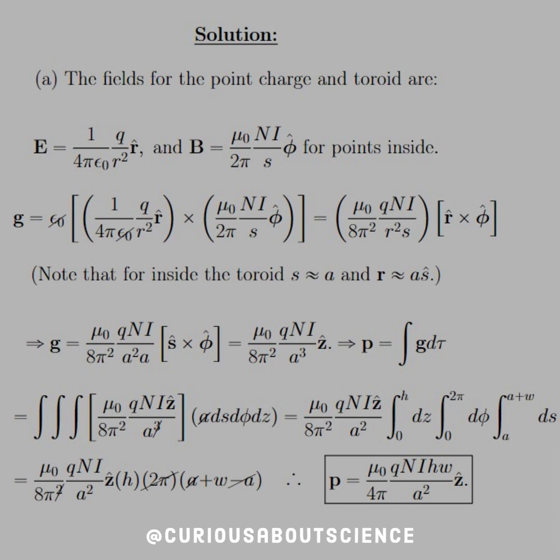We see that S hat cross phi hat is equal to Z hat. And then we see that P is equal to the integral. We have our integration space of DS, D phi, DZ. Zero to H for Z, zero to 2 pi for phi, and S is A to A plus W. Once we cancel out everything we need to, pull out the constants, we get H from DZ, 2 pi from phi, and A plus W minus A, the A's cancel, we're left with just W. Two pi cancels with the 8 pi squared. And we see that the linear momentum goes to mu naught over 4 pi QNI HW over A squared in the Z hat direction.